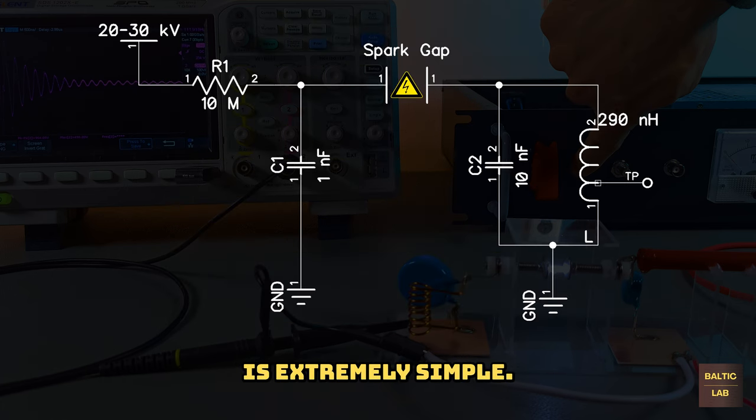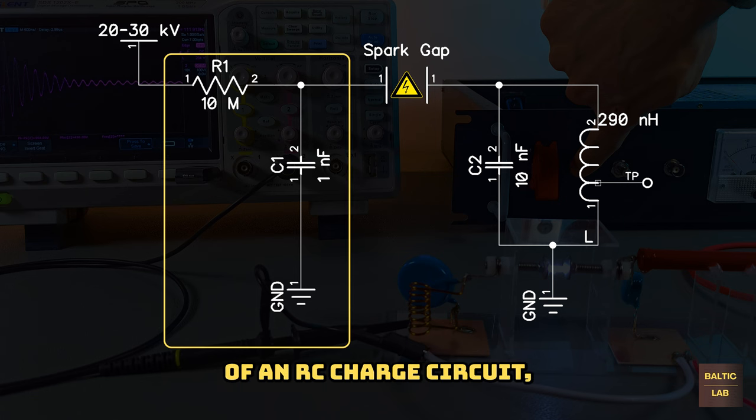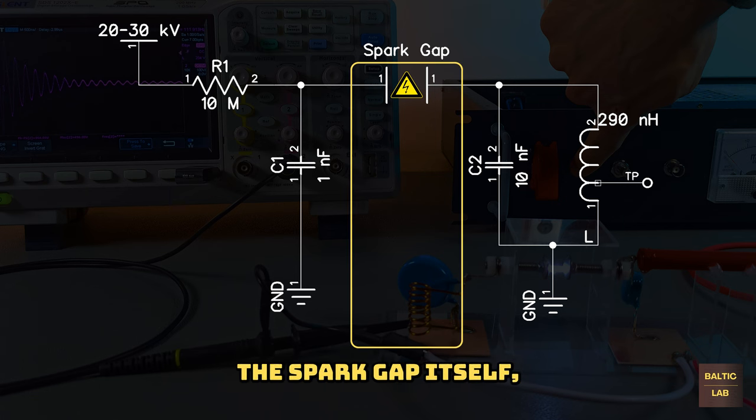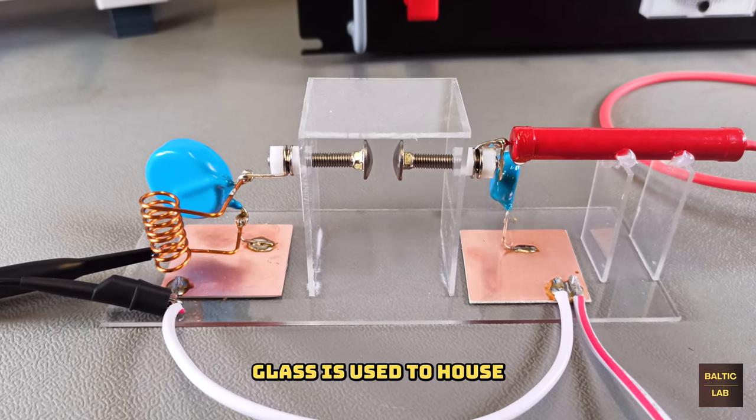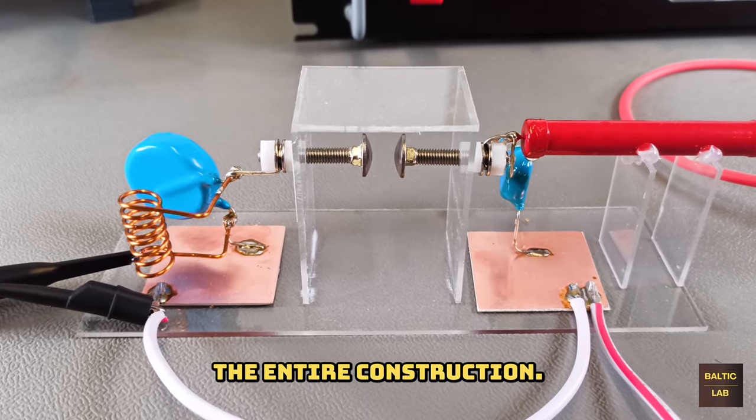The circuit itself is extremely simple. It consists of an RC charge circuit, of course the spark gap itself, and a resonant LC tank circuit. Three millimeter acrylic glass is used to house the entire construction.